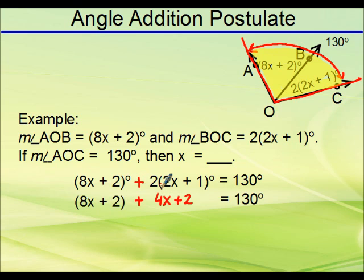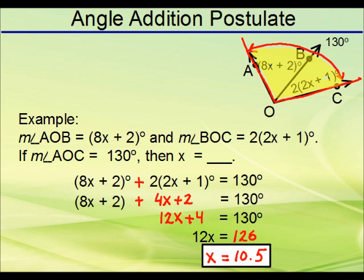So, that would mean distributing here, then collecting like terms, subtract 4 from both sides, then divide by 12 to finish off. And that's really all there is to it. And that's it for this one. I'll see you next time.